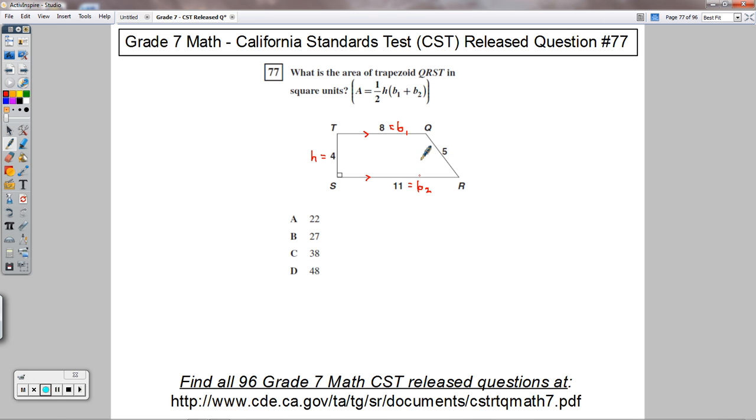If I flip-flop those, we're still adding them together, so it doesn't really make a difference. So it's the average of the bases, one half of the bases, times the height. That's another way to think about area of trapezoids.